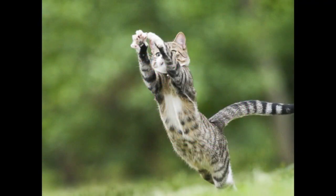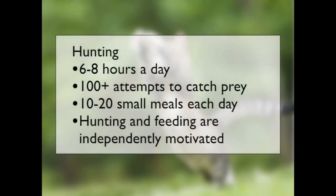Cats will typically spend around six to eight hours a day hunting, making around 100 or more attempts to catch prey, of which only around 10 to 20 are successful, each resulting in a small meal. The cat may not consume all of what it catches — it may eat part of the prey and bury the remaining part in loose sandy soil to desiccate, allowing it to eat that later, although cats generally prefer live fresh prey. Importantly, hunting and feeding behaviour are independently motivated. Cats will hunt, catch prey, consume it, and return to hunting again immediately — even if relatively full. Their normal activity is to eat very small amounts, snack on the go, and return to activity again.